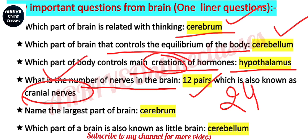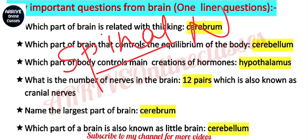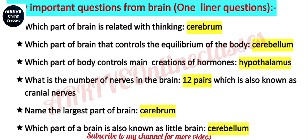Cranial nerves and spinal nerves — both these questions have been asked many times in NEET and board exams. The number of spinal nerves is 31 pairs. Next question: name the largest part of brain. The answer is cerebrum — about 80 percent of brain activity occurs in the cerebrum.